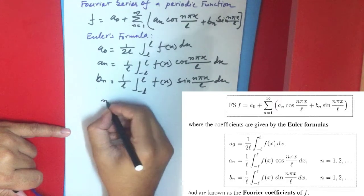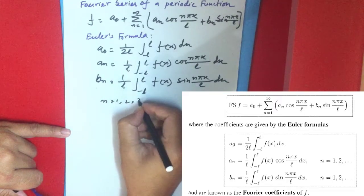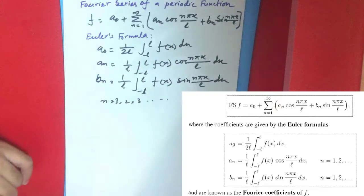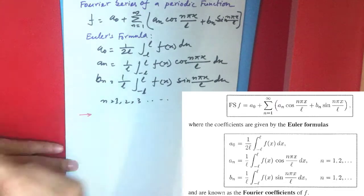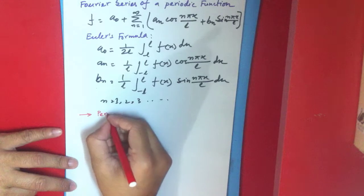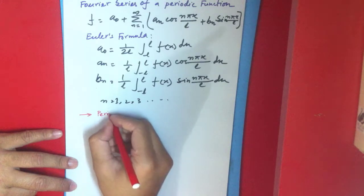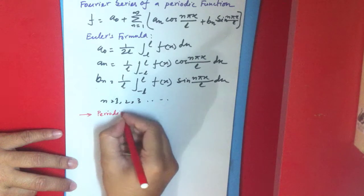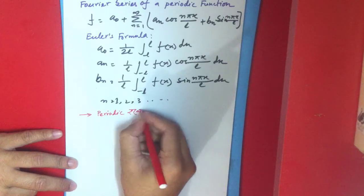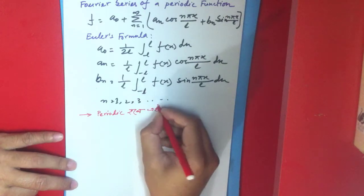Here 2L is the period. The period is 2L. This applies to periodic functions, which we can now apply.